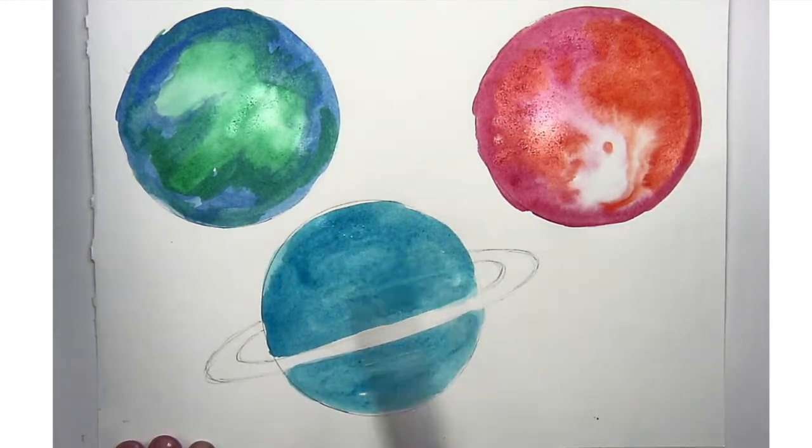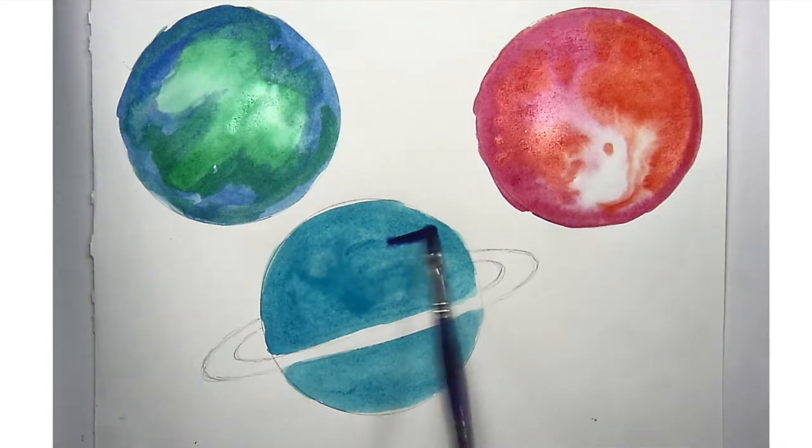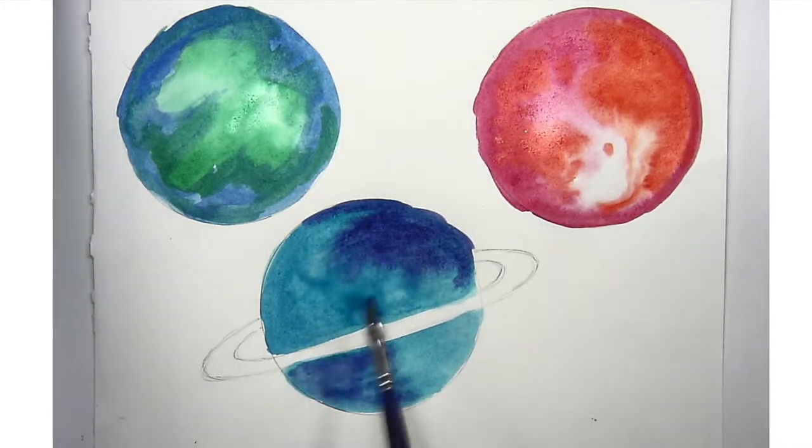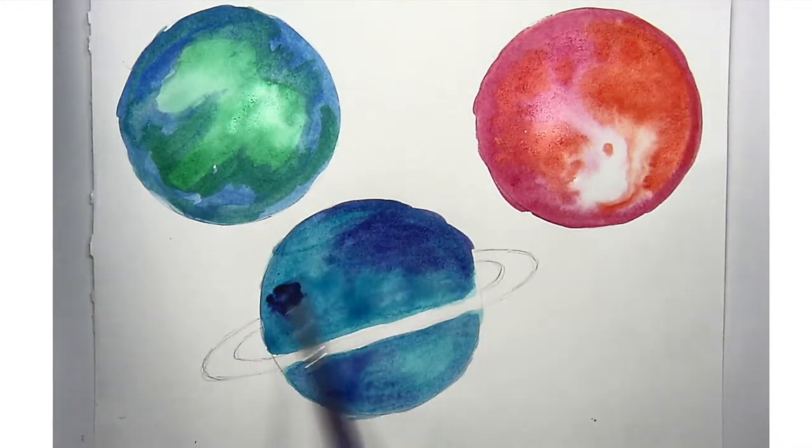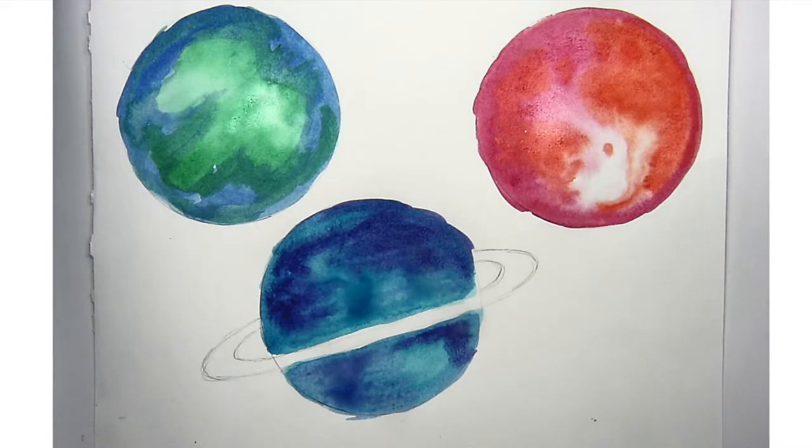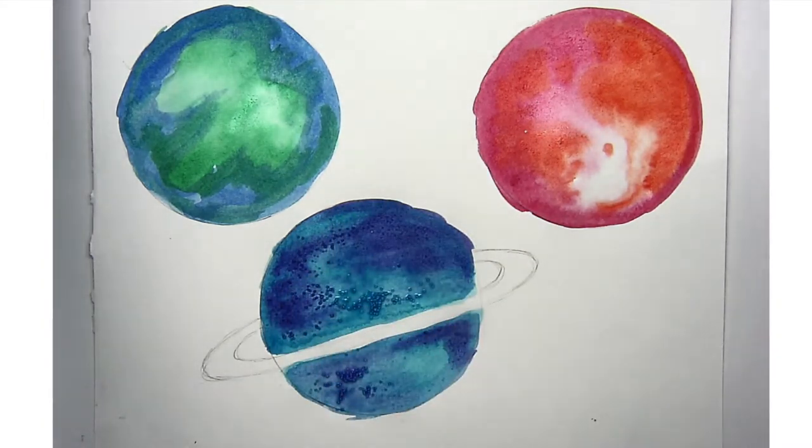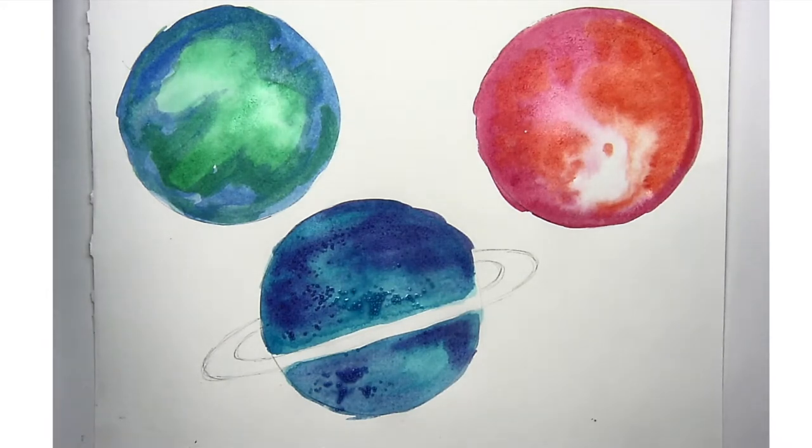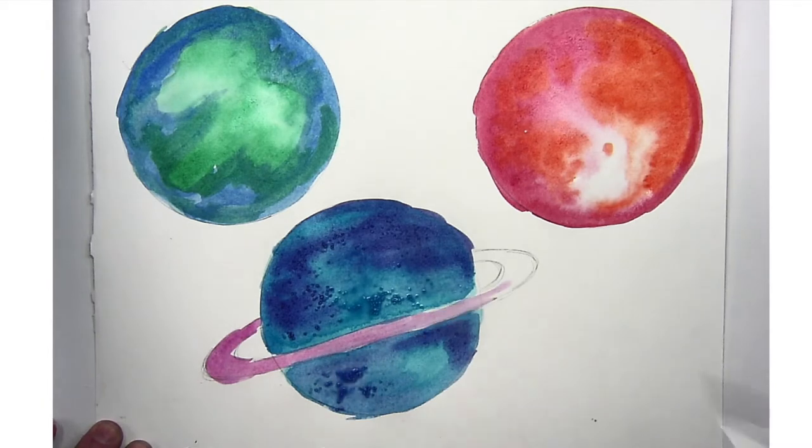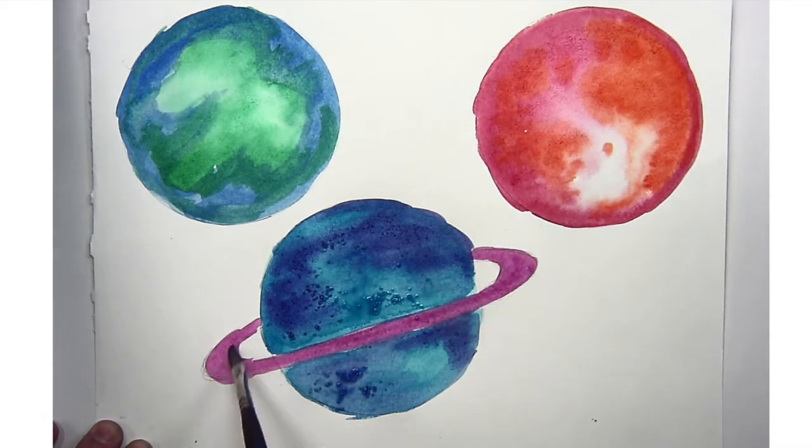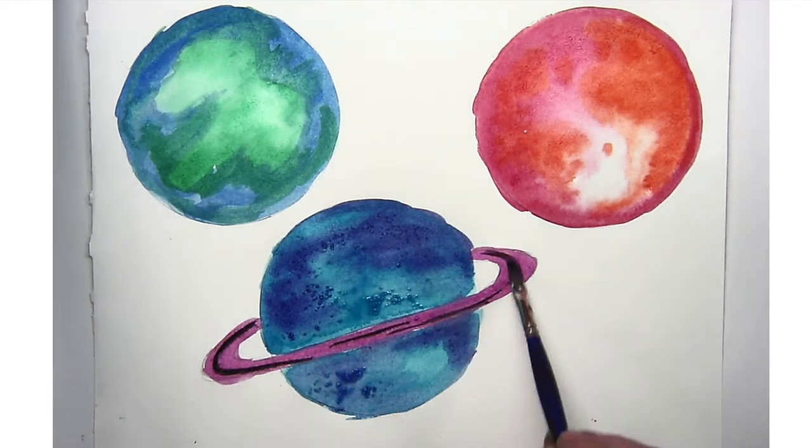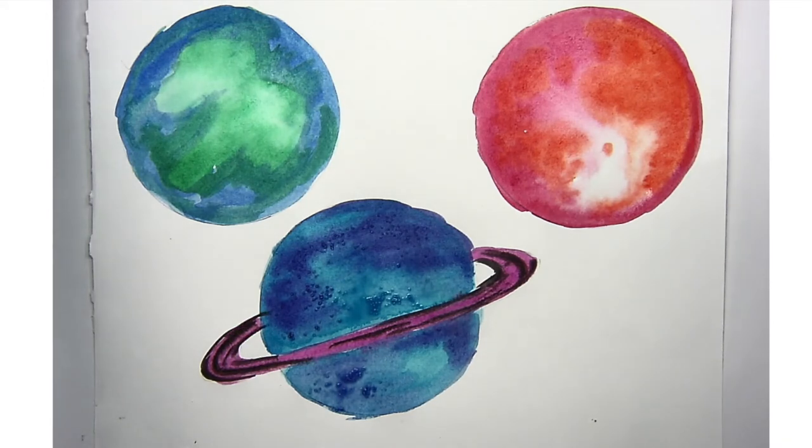For my last planet, I'm using sort of a turquoise-y blue. And then right on top of that turquoise-y blue, I added a darker blue. And that did that same sort of wet-in-wet technique. And then I decided to sprinkle some salt on top. That creates kind of an interesting texture. So you'll see when I take the salt off, it kind of creates a rough looking texture. Last, I created some rings with some purple and black. And then that's it.